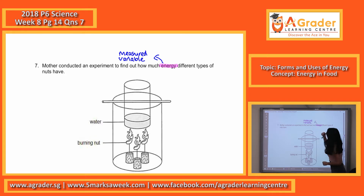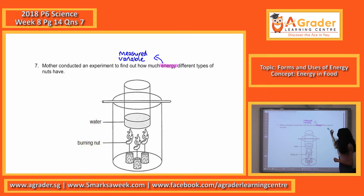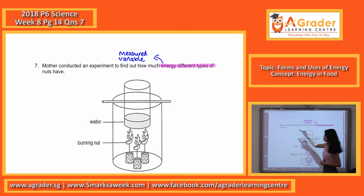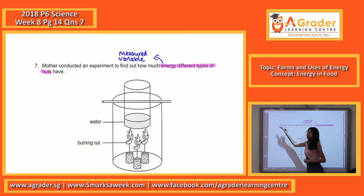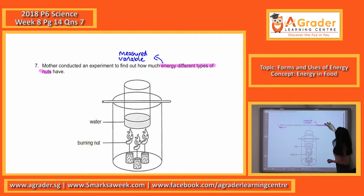Next, you have to identify the change variable, which is different types of nuts. The word 'different' tells you a clue that it is what is being changed. So this is your change variable.